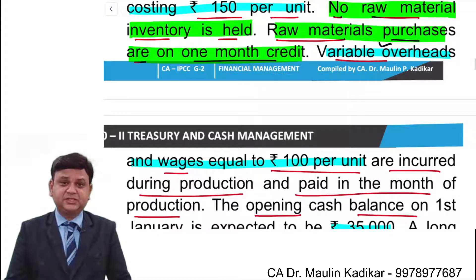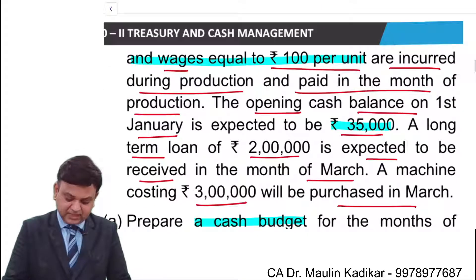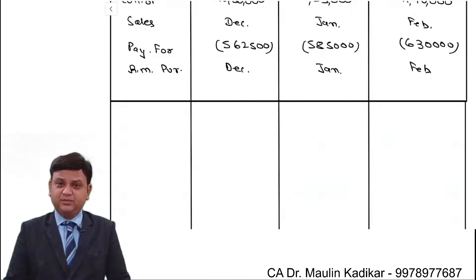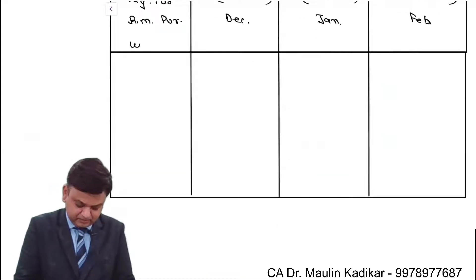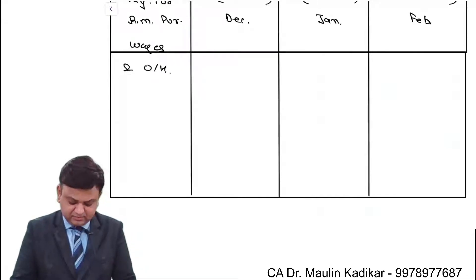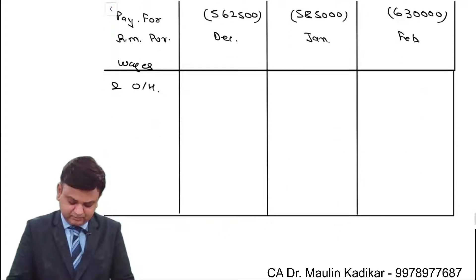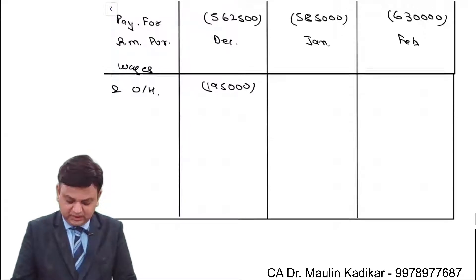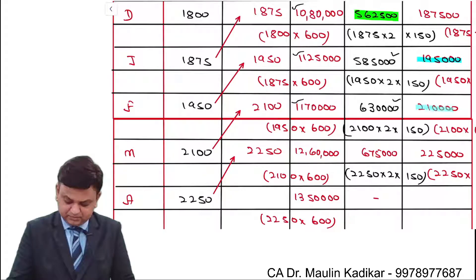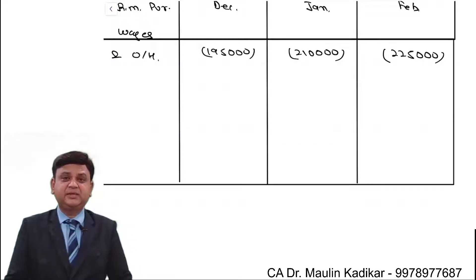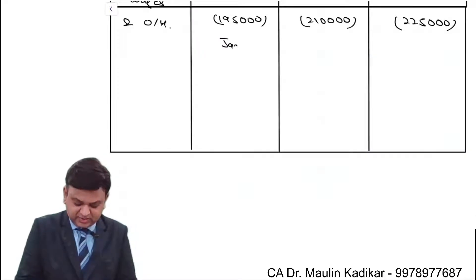Regarding variable overhead, information is given that it is incurred during production and paid in the month of production — January in January, February in February, and March in March. Wages and overhead: January is 1,95,000; February is 2,10,000; and March is 2,25,000.